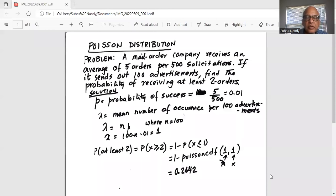So here it is. A problem on Poisson distribution. As I said, it's a discrete probability distribution.